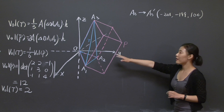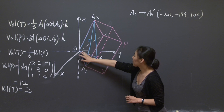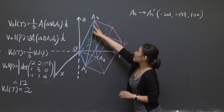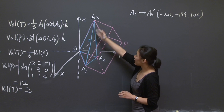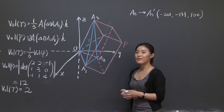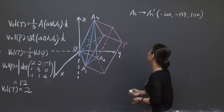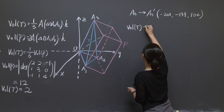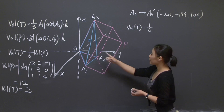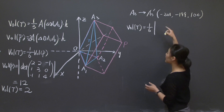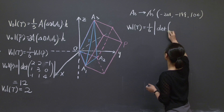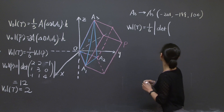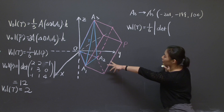This point seems to be far away from the origin — I'm not even able to draw it here. As this point goes far away from the origin, the spike becomes more and more pointy; the tetrahedron looks more and more like a needle. But nonetheless, we can use the same method. The volume of T' equals one-sixth of the volume of P, which equals one-sixth of the absolute value of the determinant of the 3×3 matrix whose row vectors are the three edges.